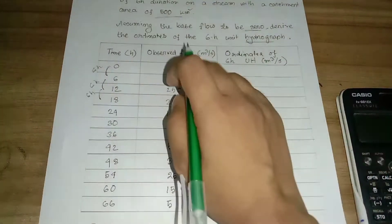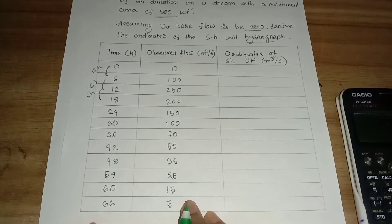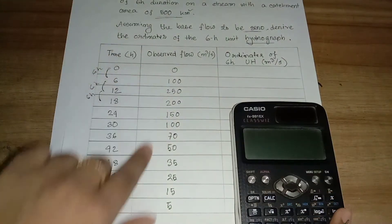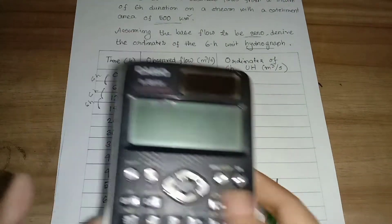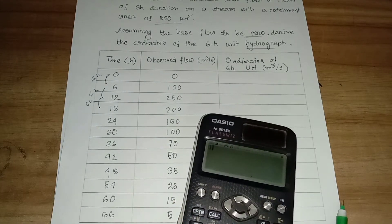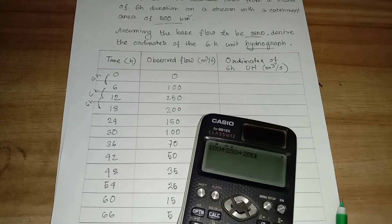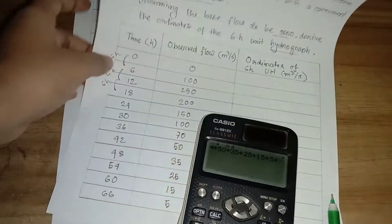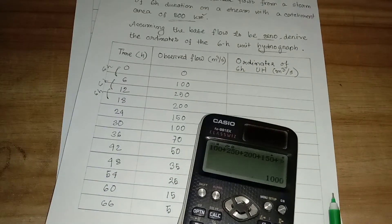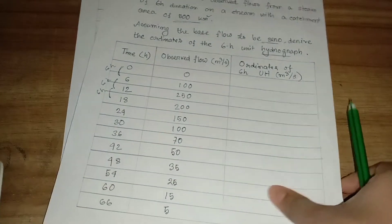First, what happens? Observed flow gives us the volume of runoff. So I am summing all the observed flow: 0 plus 100 plus 250 plus 200 plus 150 plus 100 plus 70 plus 50 plus 35 plus 25 plus 15 plus 5 plus 0. So ultimately my answer is 1000.